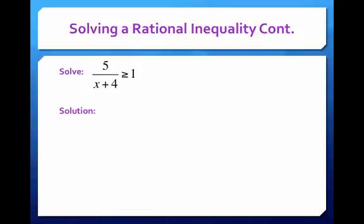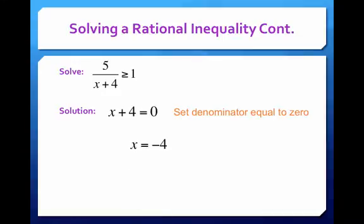Now, what we want to do is take our denominator and set it equal to zero. So just take x plus 4, set it equal to zero, and we get x equals negative 4. This is where we're going to have a vertical asymptote, as we know from the first part of this week's lecture.